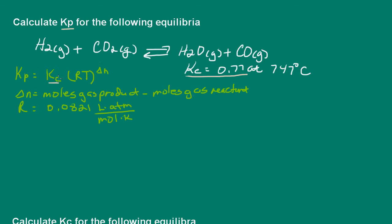and we need to multiply the equilibrium constant by R, the gas constant, and the temperature in Kelvin. And then this exponent here, delta N, would be the number of moles of gas products minus the number of moles of gas reactants. So let's go ahead and calculate that now.